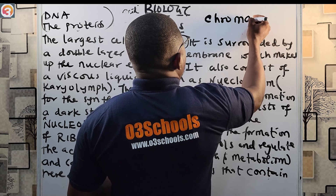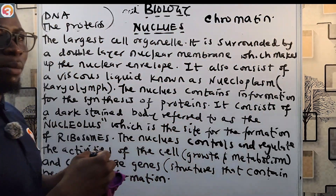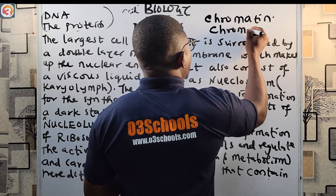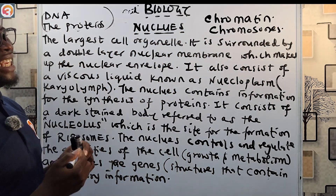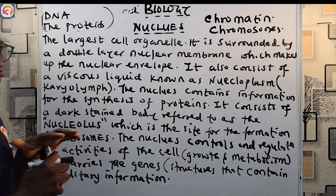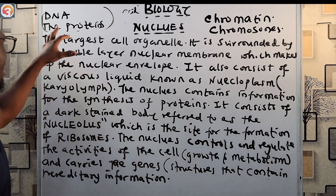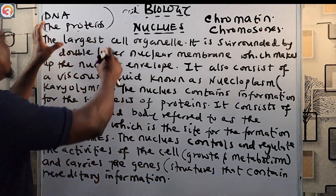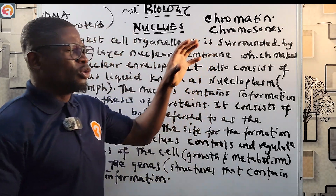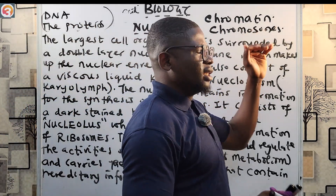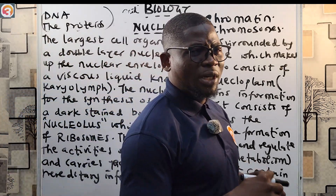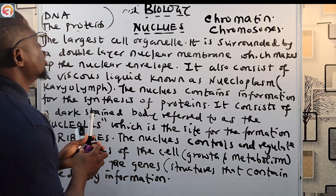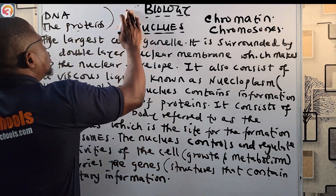The chromatin is arranged in structures called chromosomes. Your genetic information is stored in the nucleus as DNA — deoxyribonucleic acid — and proteins, together called chromatin, which are arranged into chromosomes. In humans, there are 23 chromosomes in every cell.